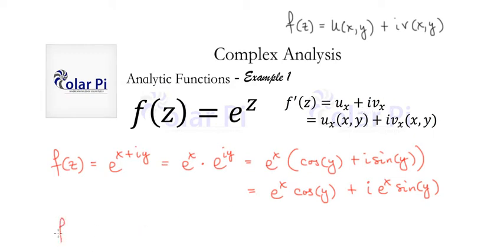So then f prime of z is going to have to equal, well, if this is u of xy, what is the partial with respect to x? Well, we should know some multivariable calculus, but when we take the partial derivative with respect to x of this,